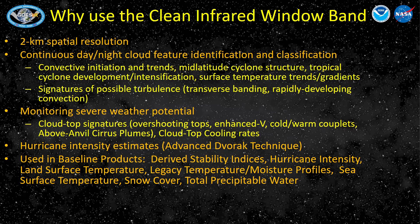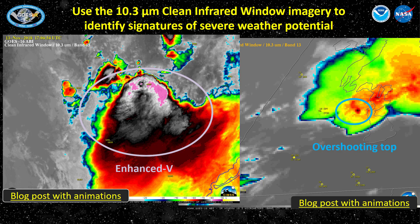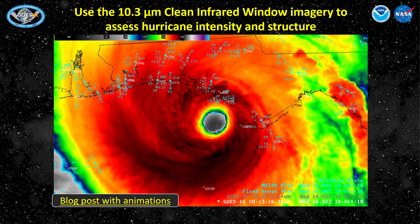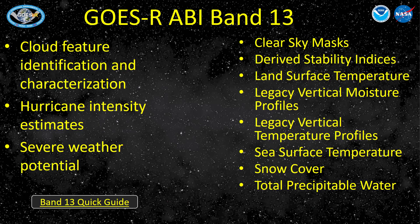Band 13 at 10.3 micrometers is called the clean window infrared band because there's very little absorption by water vapor near that wavelength. This is the chief infrared band that you'll probably be using, with many uses for general monitoring of weather phenomena day or night. One of the more important uses is to monitor the cloud top during convective events — call a meso so you get the most accurate view. Clean window infrared imagery is also important in assessing hurricane intensity. Uses for the 10.3 micrometer imagery are on the left, and you can click the link for a quick guide.